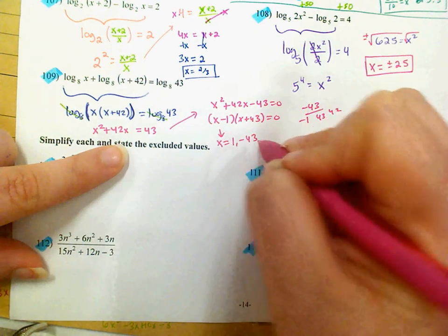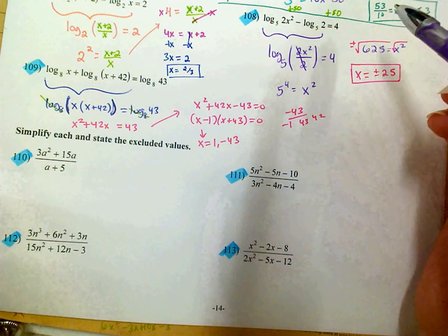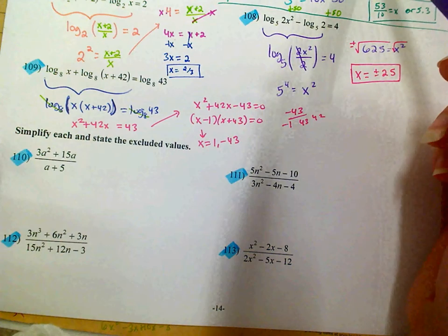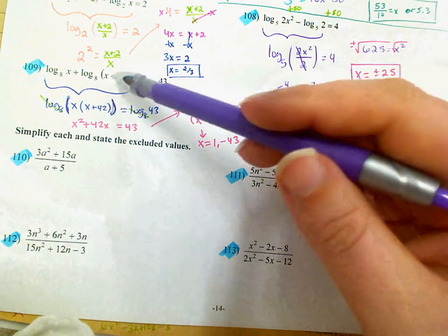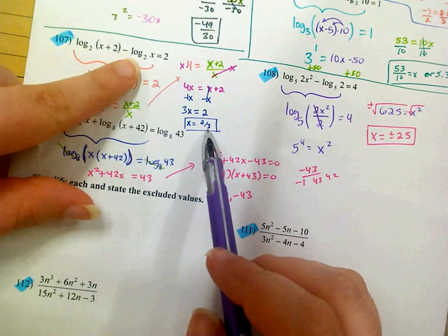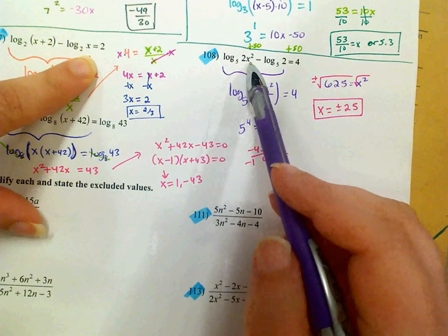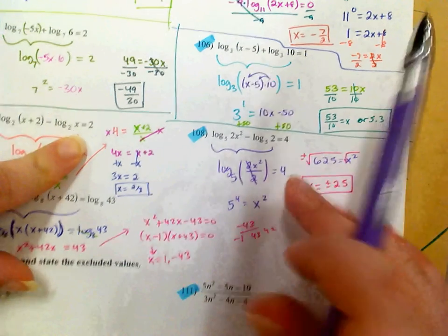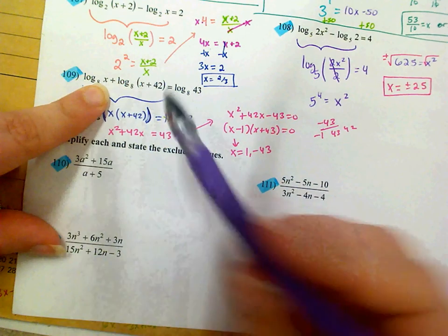Going back and checking the original — something you need to remember is that when you plug a number into a log, if it gives you a negative, then it doesn't work. For example, 2 thirds plus 2 is fine, and 2 thirds is positive. Plus and minus 25 doesn't matter because you're squaring it, so it's positive. But here I've got log of x, and if I plug in negative 43, it doesn't work. If I plug in 1, I'm fine. So negative 43 does not work, and my only answer is 1.